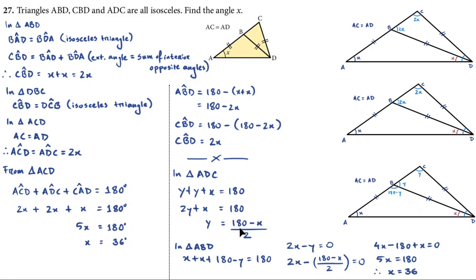From triangle ACD: Y plus Y plus X equals 180, so 2Y plus X equals 180, giving Y equals (180 minus X) divided by 2. That's our first equation. Then in triangle ABD: X plus X plus (180 minus Y) equals 180, because the angle at B in that triangle is 180 minus Y. Simplifying: 2X minus Y equals 0.